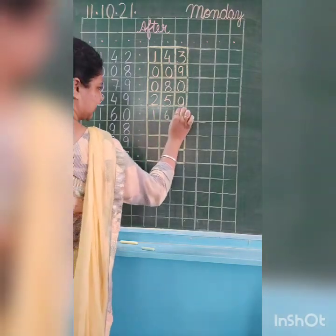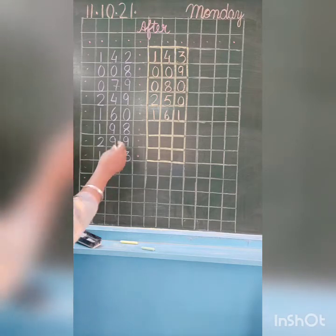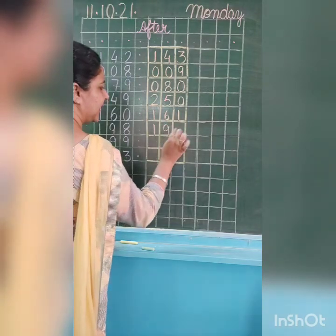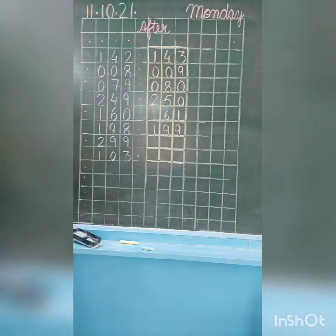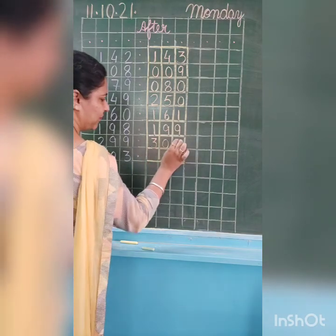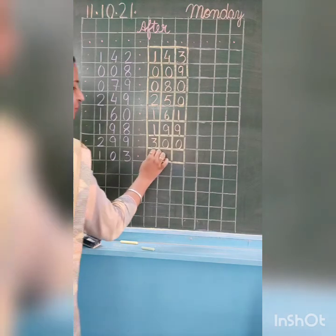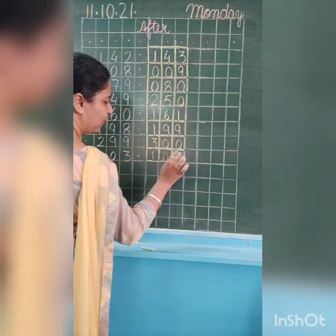Now Vita, tell me what comes after one hundred sixty? Very good, one hundred sixty-one. Now Vita, tell me what comes after one hundred ninety-eight? Very good, it's one hundred ninety-nine. Now Vita, tell me what comes after two hundred ninety-nine? Three hundred.